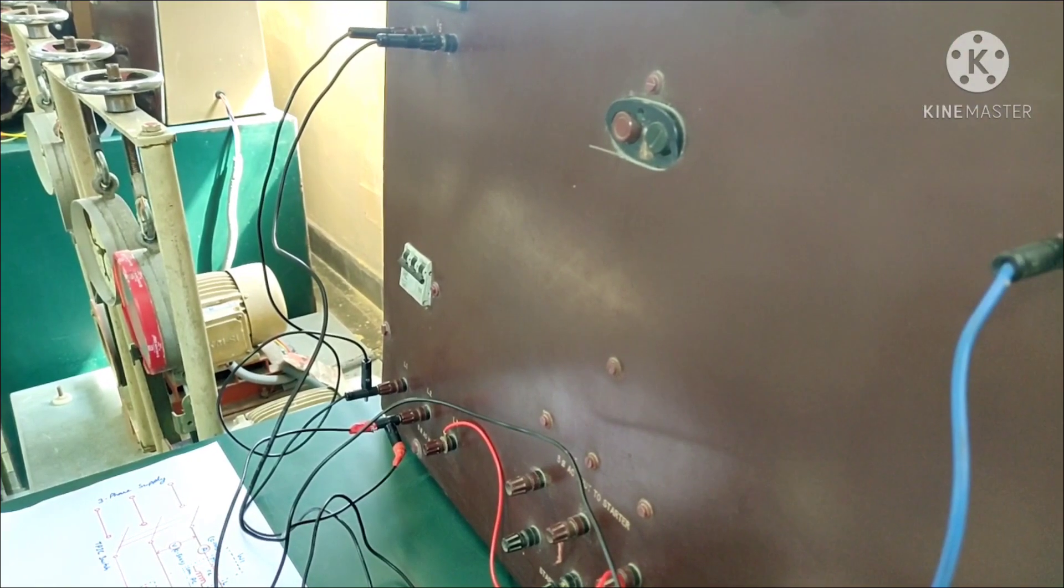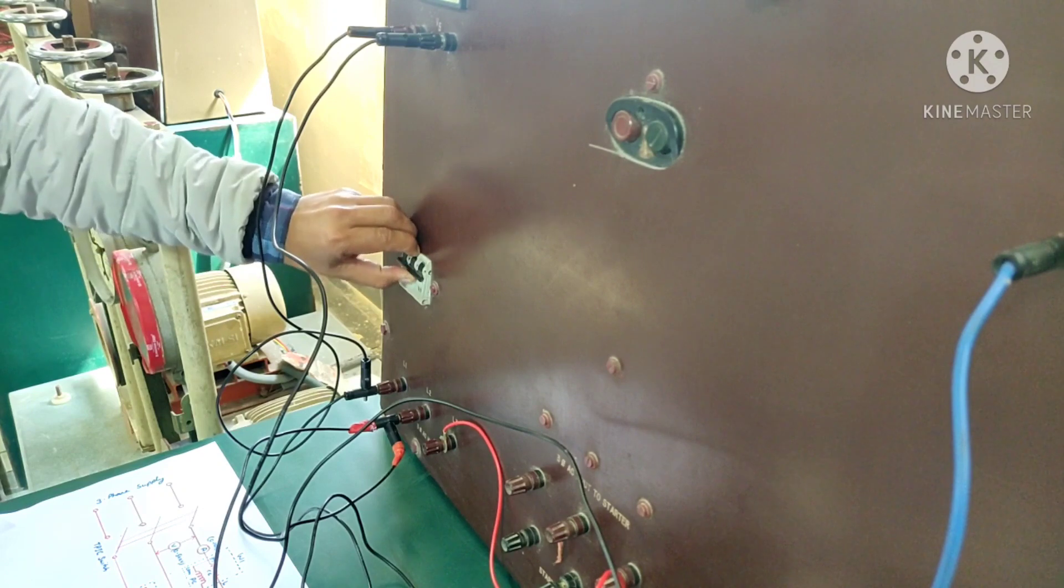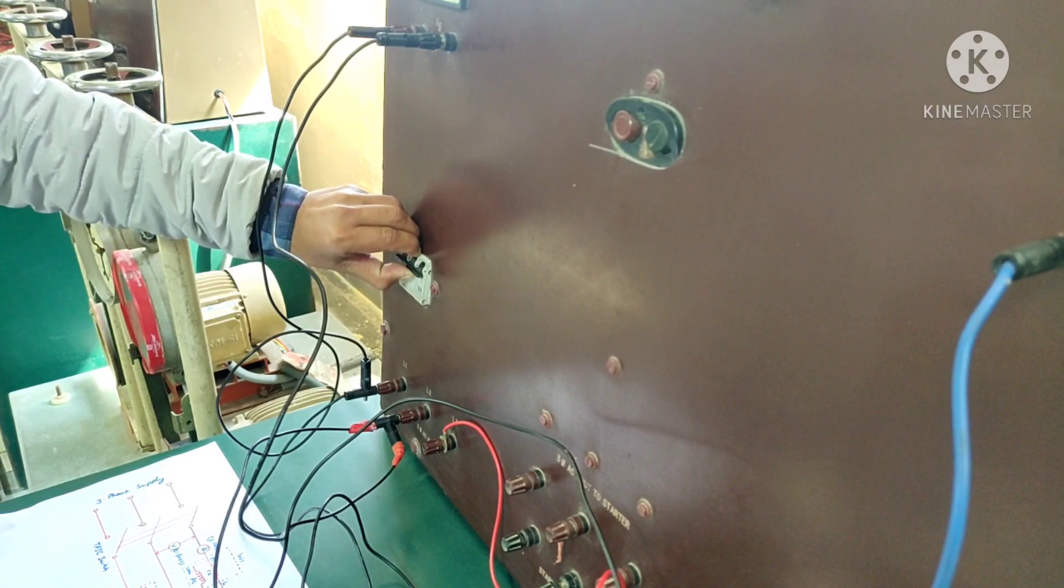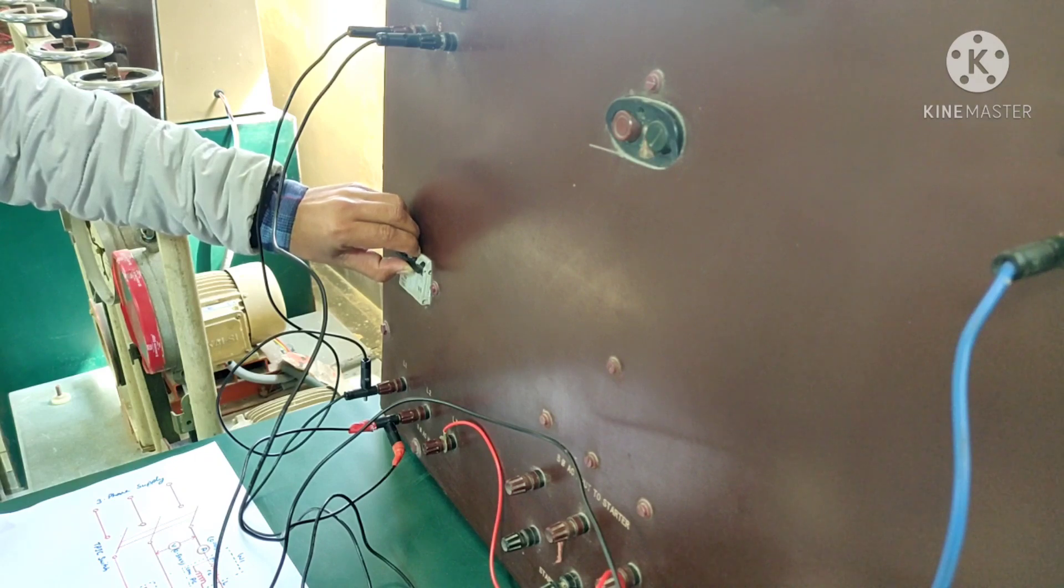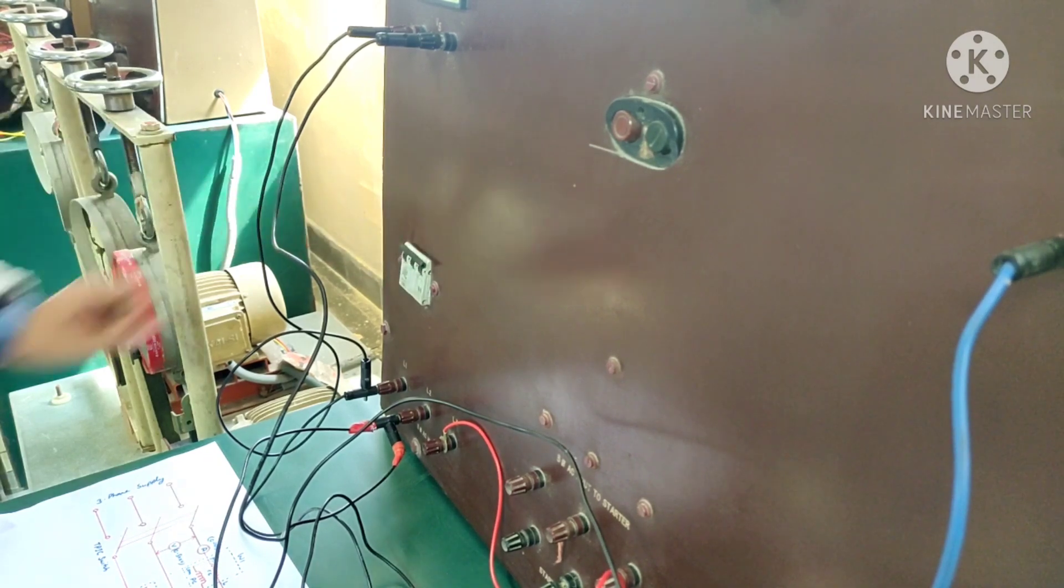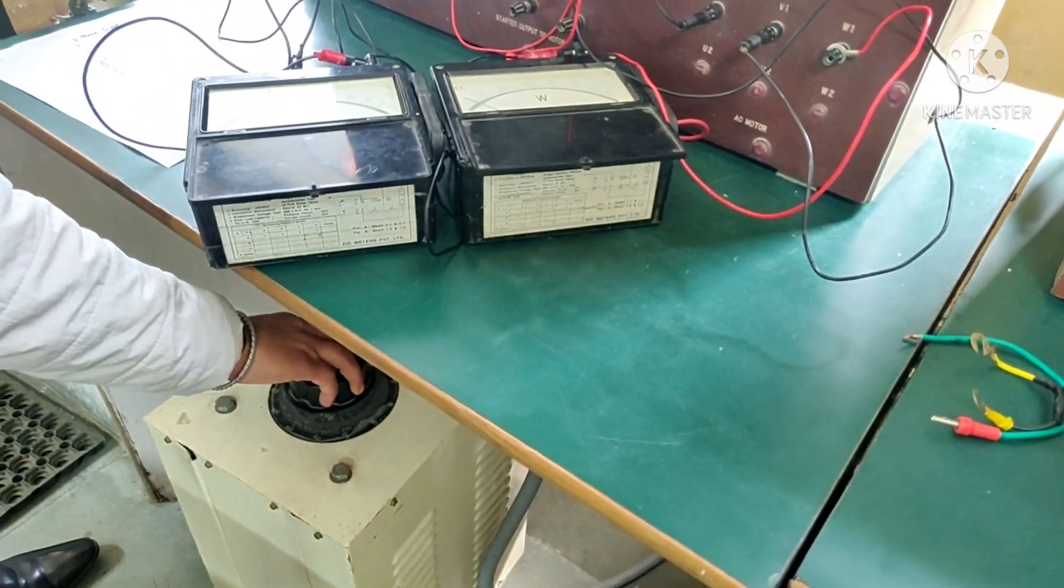Next step here is to switch on, and please ensure that your variac is at minimum position while you are starting the supply. Now the TPIC switch has been turned on and supply has been given to the panel. This supply can be increased or decreased with the help of this variac.